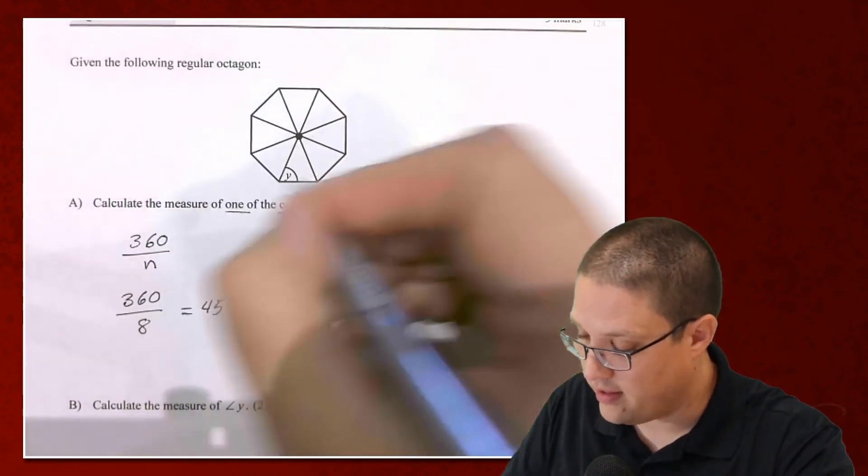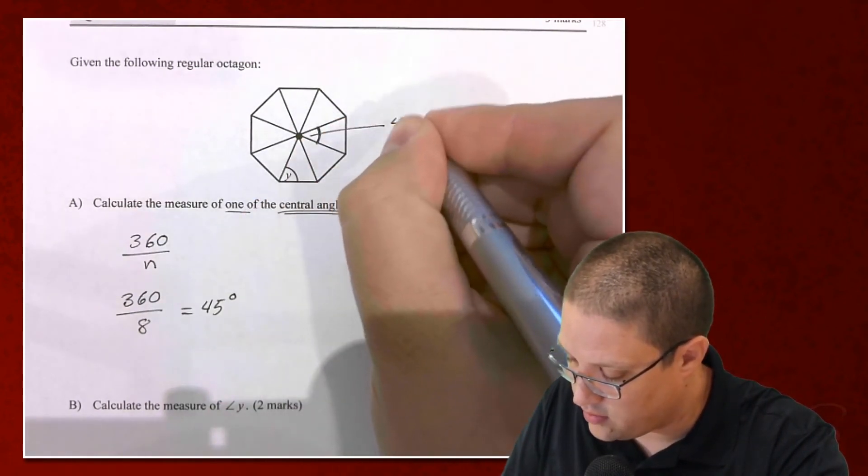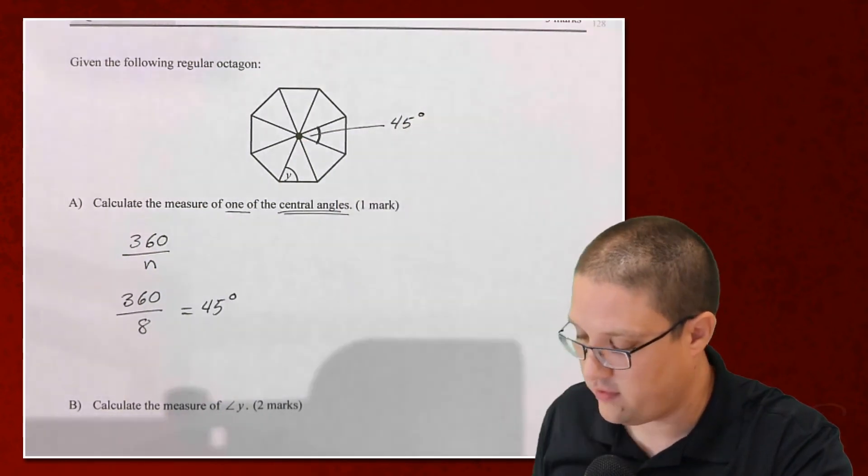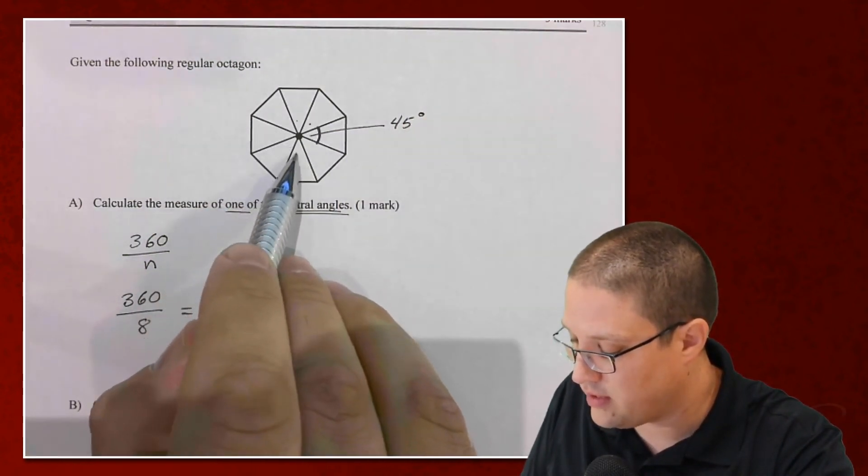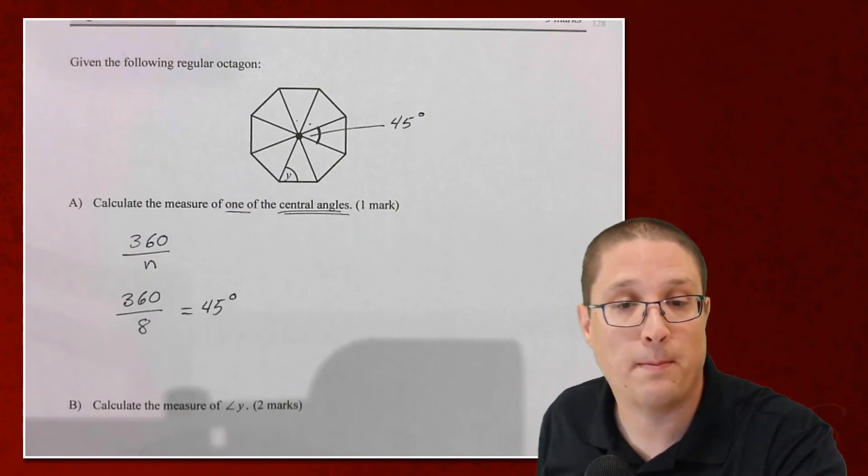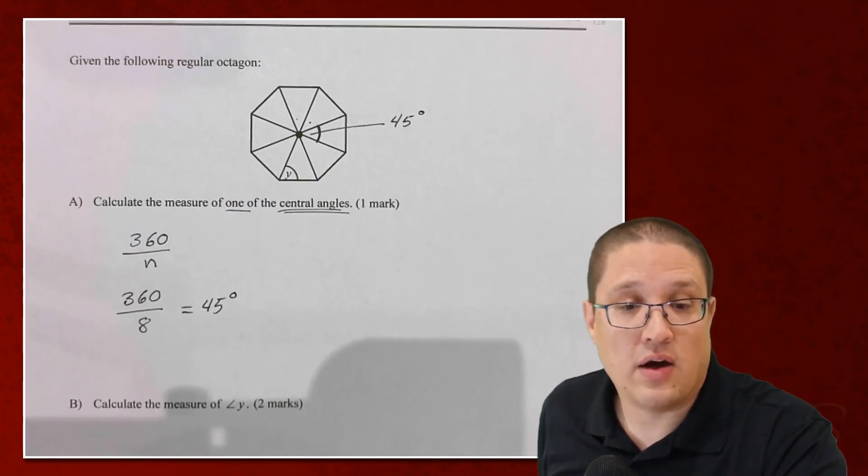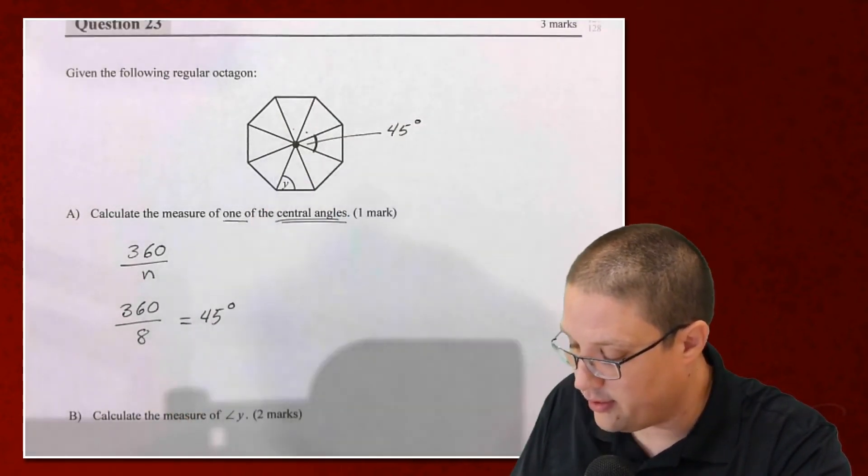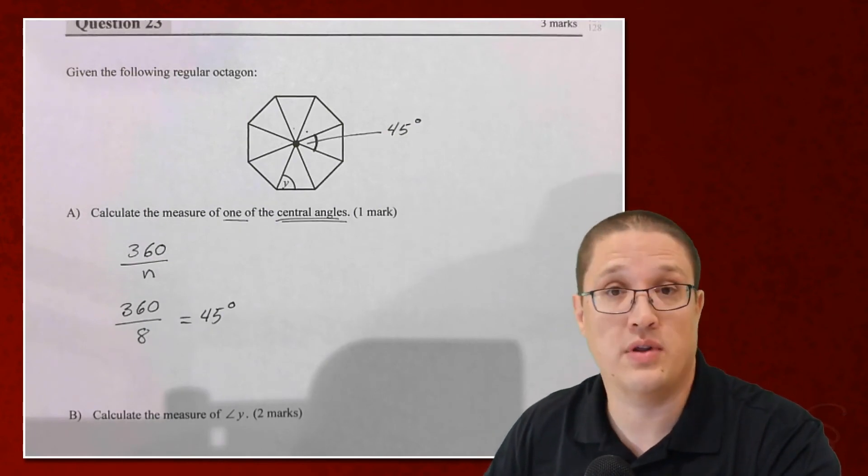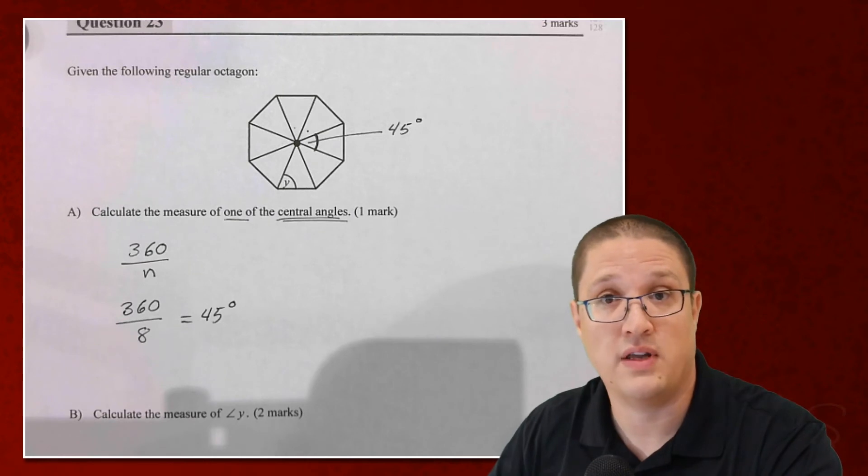If I look at this octagon here, that's the central angle there. So that is 45 degrees. Each of these central angles here is also 45 degrees. This also asks us to calculate the measure of angle Y in our triangle here. We have two ways that we could do this. There's two nifty ways that we could do this. I'm going to show you through both of these.